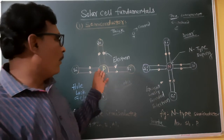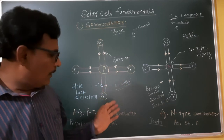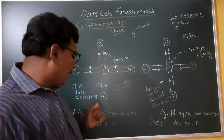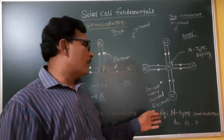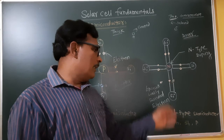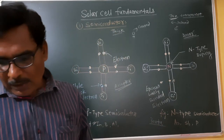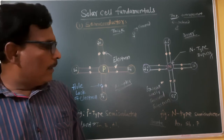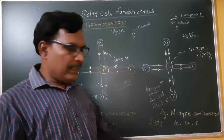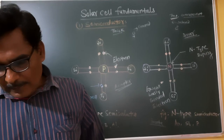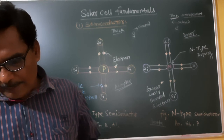P-type material is obtained by doping silicon with trivalent elements like boron and aluminum. N-type material is obtained by doping silicon with pentavalent impurities like antimony, arsenic, and phosphorus. These are shown in figure one and figure two for P-type and N-type semiconductors. The P-type layer is thick and the N-type layer is thin.